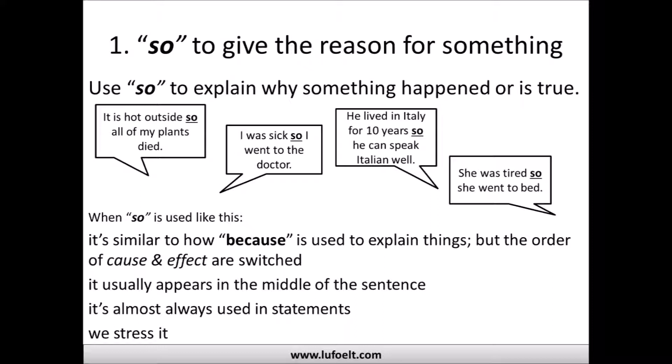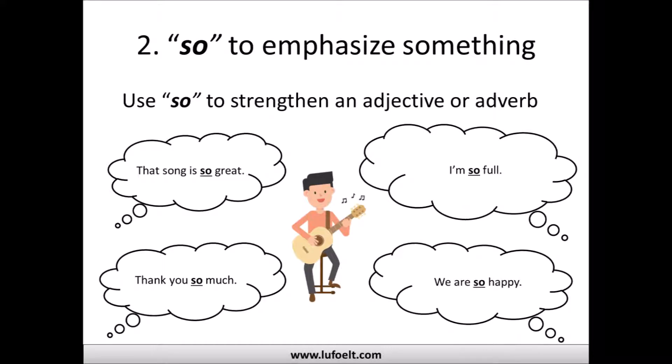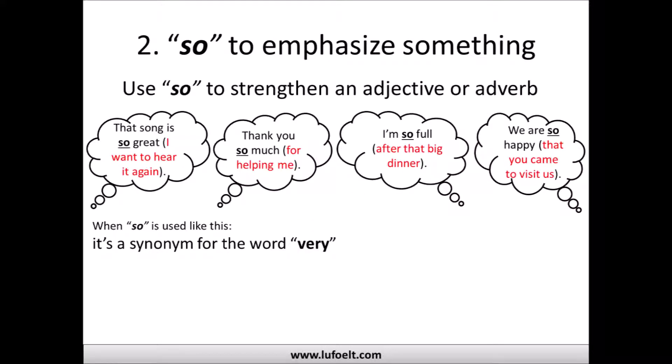We stress the word 'so' when using it for cause and effect — for example, 'She was tired SO she went to bed' — to show that relationship. The second way 'so' can be used is to emphasize something. We use 'so' to strengthen an adjective or adverb in a sentence. For example: 'That song is so great,' 'Thank you so much,' 'I'm so full,' 'We are so happy.' Here 'so' is a synonym for 'very.'